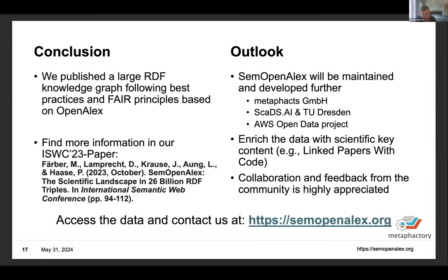To finish: we have published a large-scale RDF knowledge graph following best practices and FAIR principles based on OpenAlex — a semantic representation of OpenAlex. For more information, you can look at our ISWC paper. SemOpenAlex will be maintained and developed further by Metaphact, Scads.AI, and TIB, and it is also an AWS Open Data project. We plan to enrich the data further by linking more scientific key content to it.